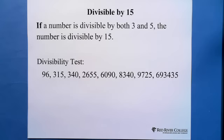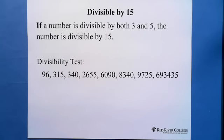The key is divisibility by 5: when you look at the last digit, if the last digit is 0 or 5, it is divided by 5. If it is not 0 or 5, it is absolutely not divided by 5, so you don't need to worry about divisibility by 15.